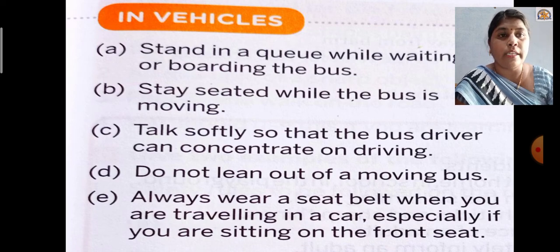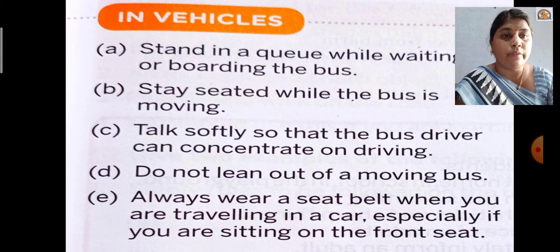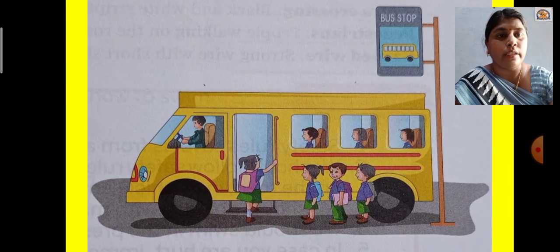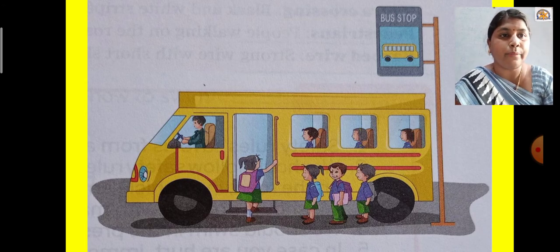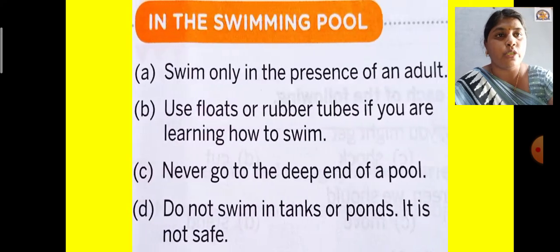Number D: do not lean out of a moving bus — do not put your hand or head out of the window or door. Number E: always wear a seat belt when traveling in a car, especially if you are sitting on the front seat — it is compulsory and is for your protection. See the picture of the school bus — children are standing in a queue at the bus stop.